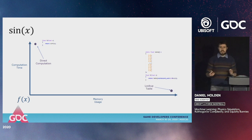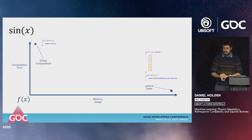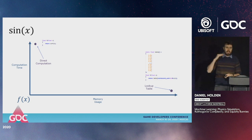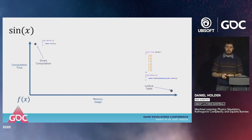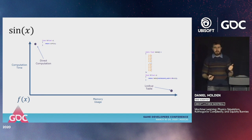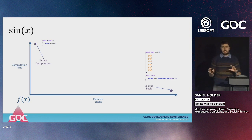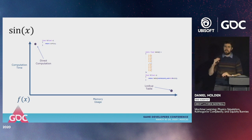Another option is a lookup table: we pre-compute every single value of the function and store it in a big table. At runtime, we just jump to the position we need and get the value instantly. For a very complicated or expensive function, this can be much, much faster. The downside is we have to pre-compute and store all these values — trading memory for computation time.